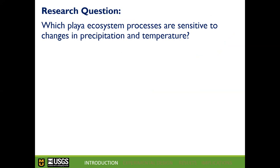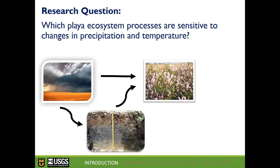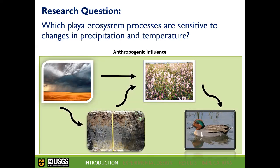For my project, we tried to predict future temperature and precipitation trends as accurately as possible and use those predictions in an experimental setting to evaluate impacts on the soil ecosystem, plants, and ecosystem services like waterfowl habitat. All of this is within the scope of anthropogenic influence — not just climate change, but also how humans are using this land and whether they'll respond to future changes.